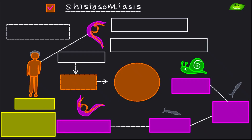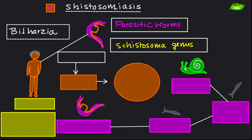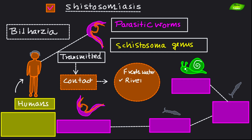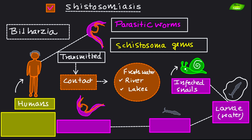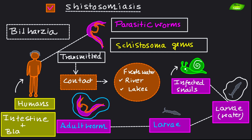Now let's move on to schistosomiasis, also known as bilharzia. It is caused by parasitic worms of the genus Schistosoma. The parasites are transmitted to humans through contact with contaminated freshwater such as rivers and lakes, especially where infected snails are present. These snails release larvae into the water, and when the larvae penetrate the skin, they mature into adult worms.